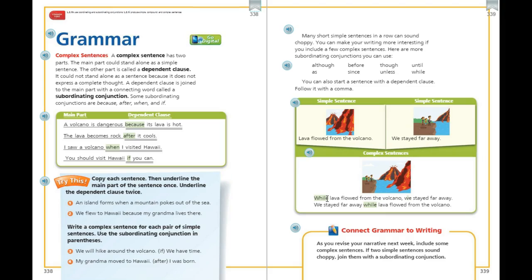That's one way you could use these two simple sentences to complete a complex sentence. You could also put it, we stayed far away while lava flowed from the volcano. Same subordinating conjunction, but switch the simple sentences into a different order. Either way, it's going to make your writing sound more interesting and less choppy.